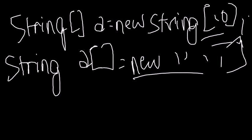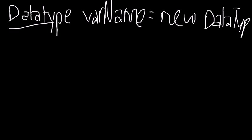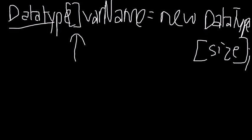So if you wanted a more generic format, I would write: data type, var name for variable name, equals new data type. I would prefer this way of doing it - putting the bracket after the data type - because it makes your code cleaner, it makes it look neater.